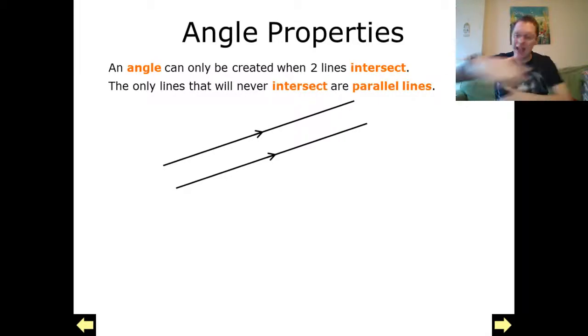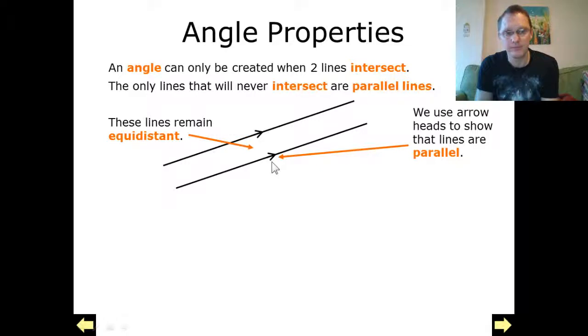They're lines which will never, ever cross. And they're parallel, which is denoted by these arrows. I've used a keyword here. They remain equidistant. So they remain equal distance. We will be talking about equidistant a bit more when we look at loci and when we look at construction.